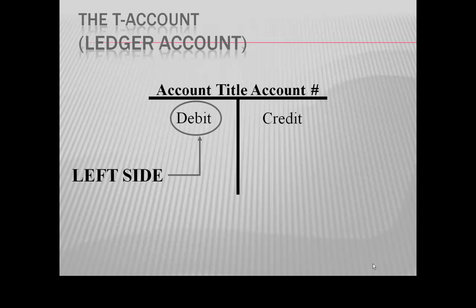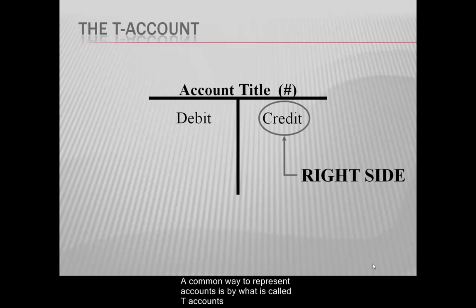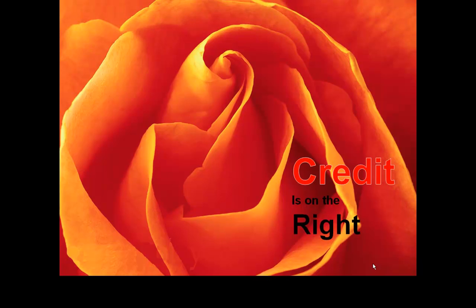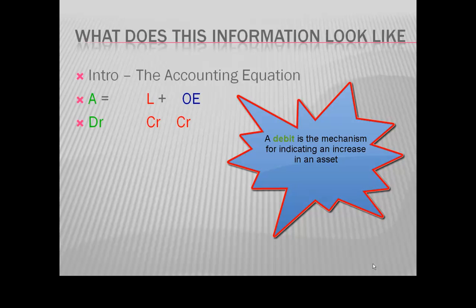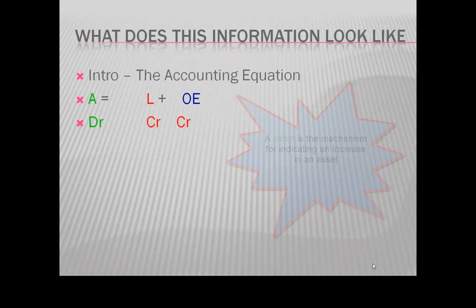Now let's look at ledger accounts. You've already had some exposure to T-accounts. In every T-account, debits are on the left and credits are on the right. Debits and credits are applied in accordance with the accounting equation — assets equals liabilities plus owner's equity. To signify an increase in an asset, we use a debit. To signify an increase in a liability, we use a credit. And to signify an increase in owner's equity, we use a credit.